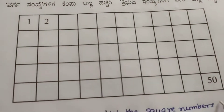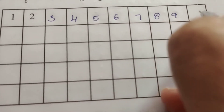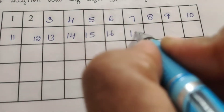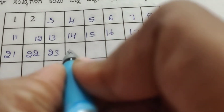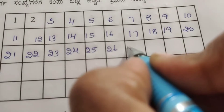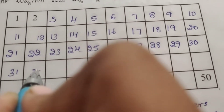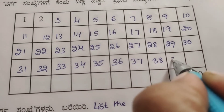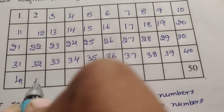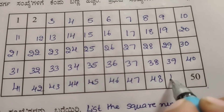Writing numbers 1 to 50: 1, 2, 3, 4, 5, 6, 7, 8, 9, 10, 11, 12, 13, 14, 15, 16, 17, 18, 19, 20, 21, 22, 23, 24, 25, 26, 27, 28, 29, 30, 31, 32, 33, 34, 35, 36, 37, 38, 39, 40, 41, 42, 43, 44, 45, 46, 47, 48, 49, and 50.